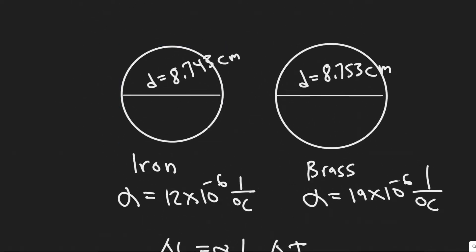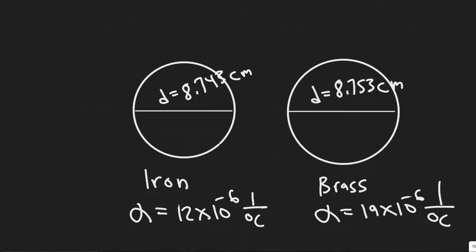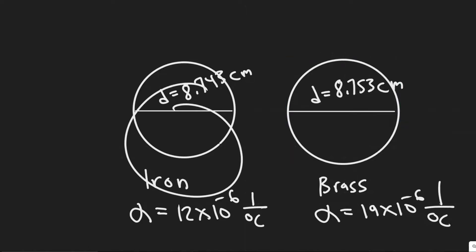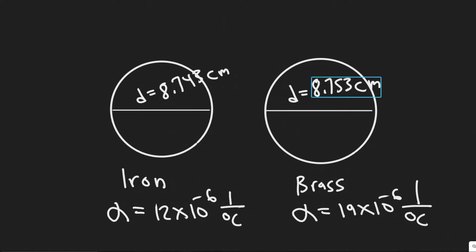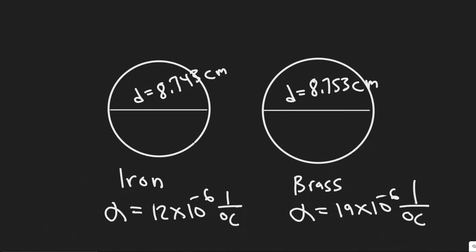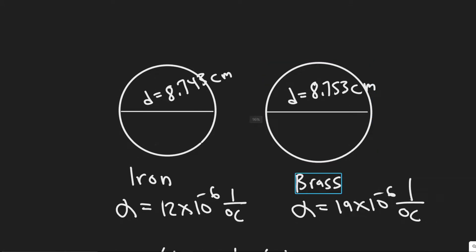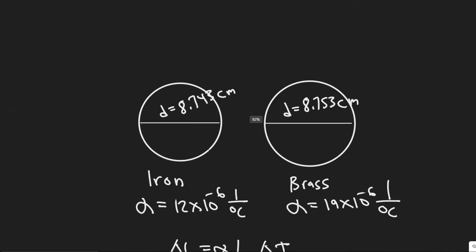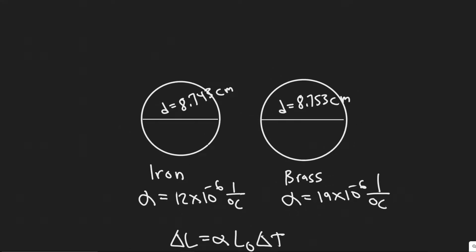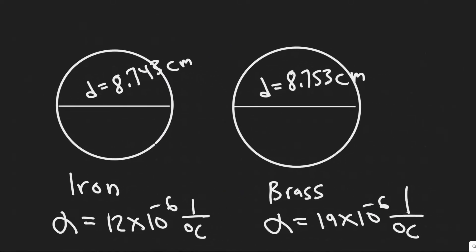What you want to imagine here is we have two rings — an iron ring and a brass plug. The diameter of the brass plug is 8.753 centimeters while the diameter of the ring is 8.743. We're trying to put this brass plug into this ring, but notice that it's bigger. So basically we're trying to find at what common temperature we can bring them to in order for this to actually fit. The brass temperature is going to have to decrease in order for this plug to shrink and be able to fit.